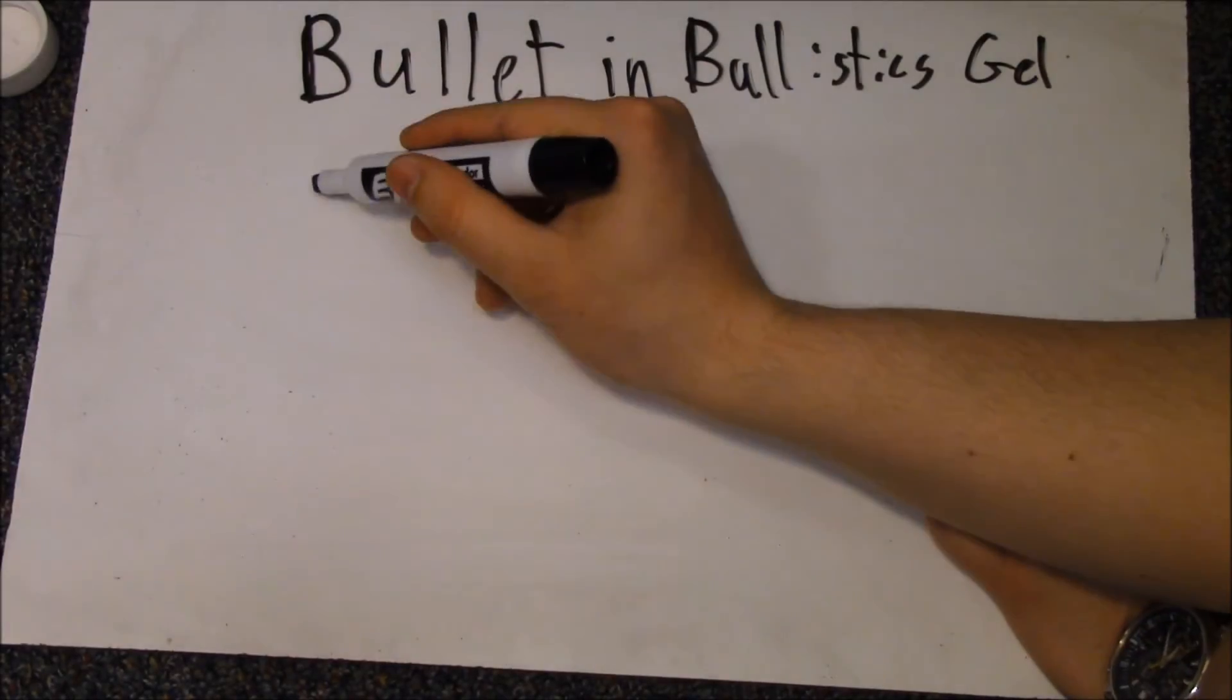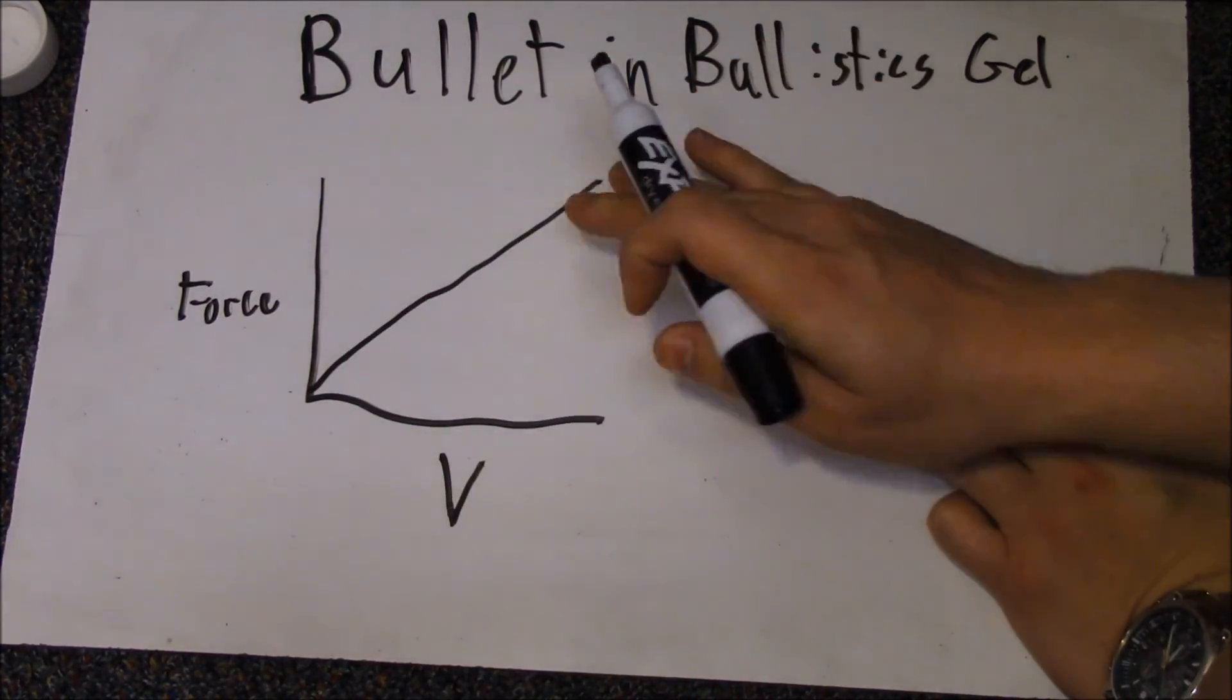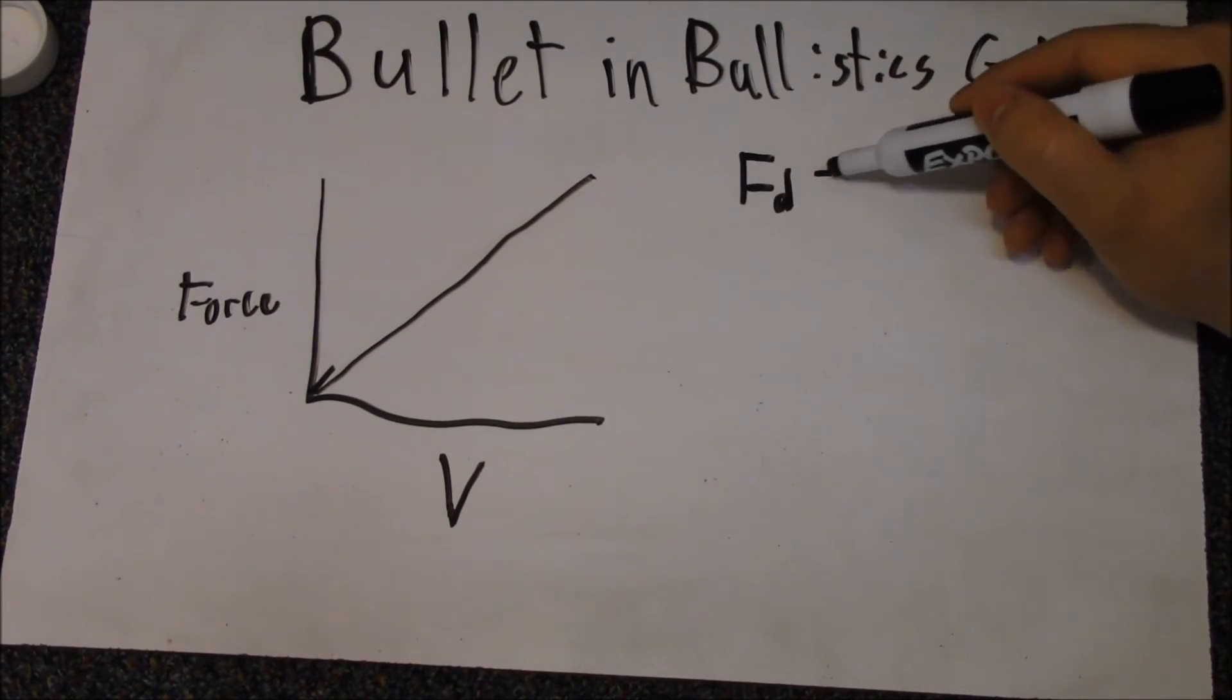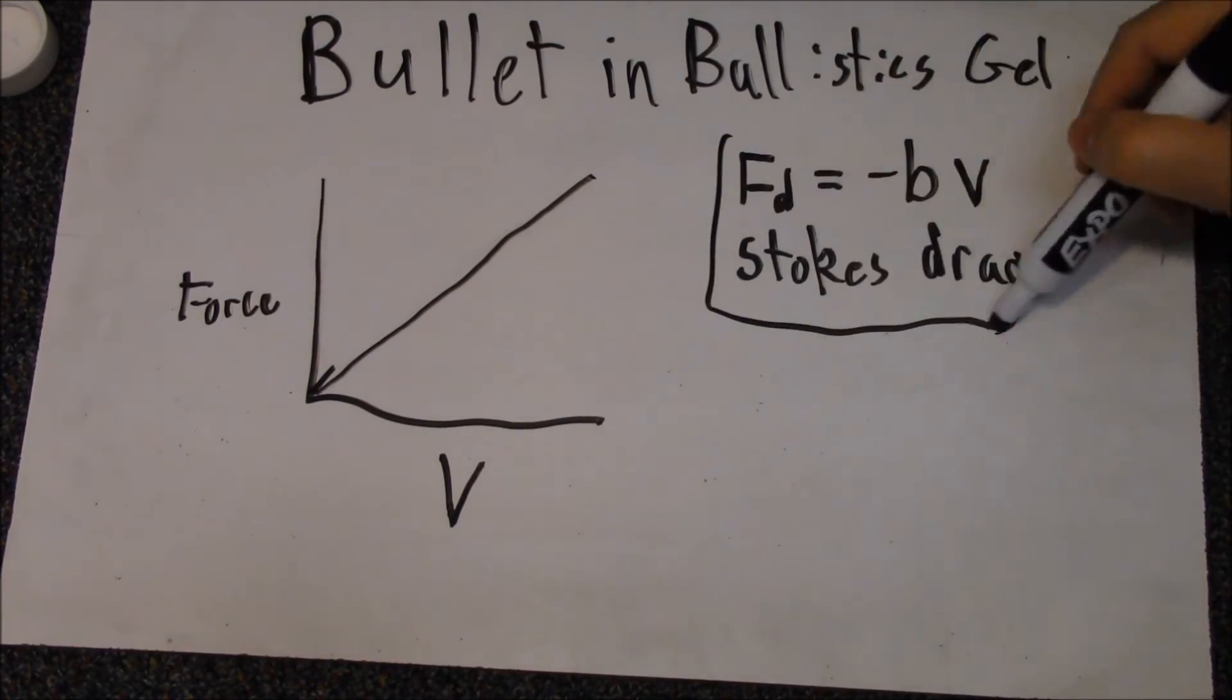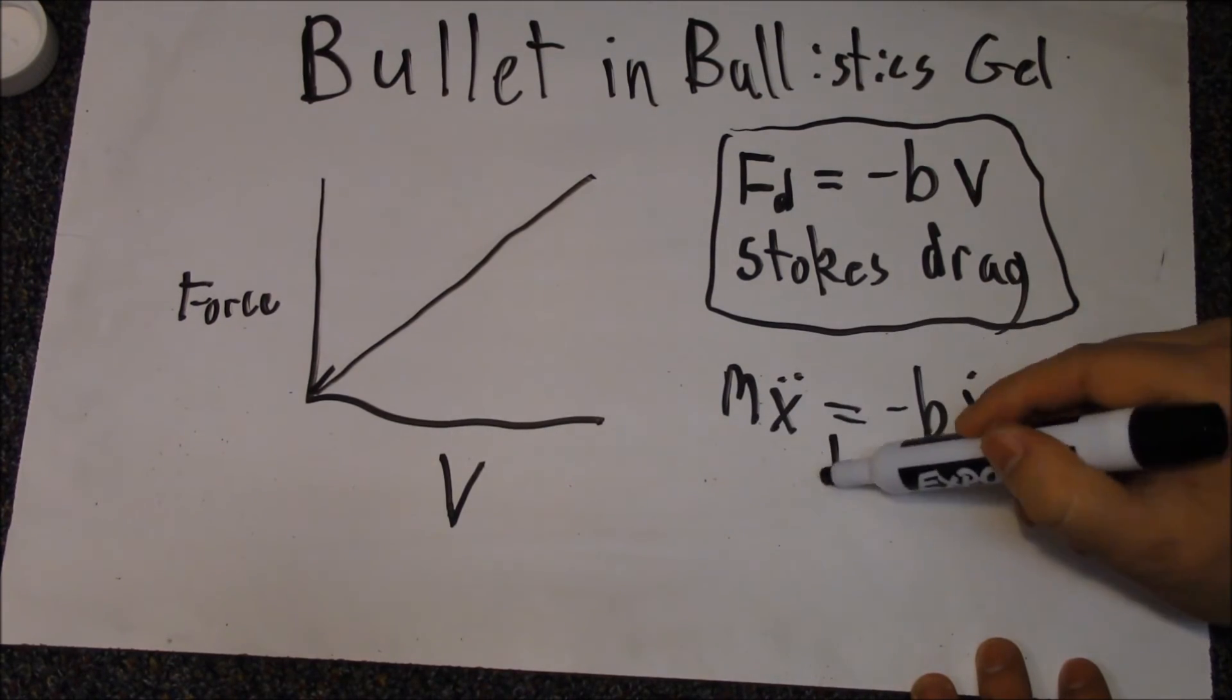Using this technique to analyze bullets in ballistic gel, I found that the force was actually linear with velocity. This suggests that the gel is behaving as a viscous fluid. A little calculus, and we find that momentum linearly decreases with distance.